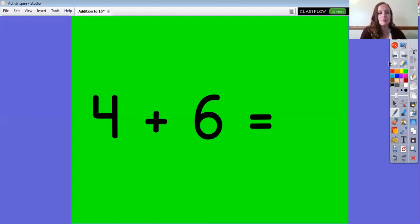Our next problem says 4 plus 6 equals. What's the bigger number here? 6. So that's the one we should put in our brain first. And then we're going to count up since we're adding 4 more numbers. 6, 7, 8, 9, 10. The answer is 10. Let's read that number sentence. 4 plus 6 is equal to 10.